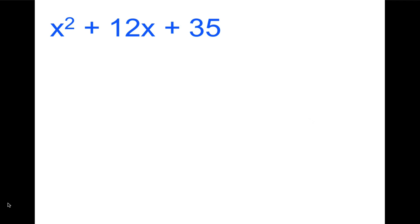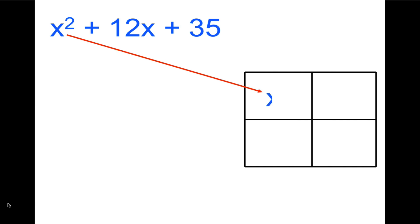We begin by drawing a generic rectangle and today you're also going to learn why we've been studying diamond problems all year long. So let's begin. We're going to take the first term, the x², and put it in the first box of the generic rectangle, and we're going to take the last term, 35, and put it in the last box. The 12x is going to be divided between the remaining squares, and the way we're going to do that is first we're going to make a diamond.